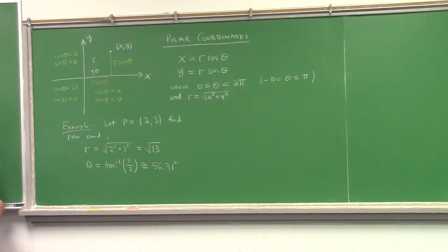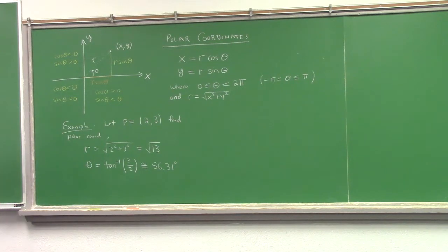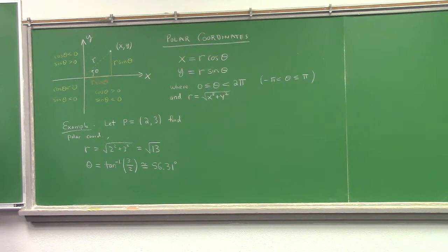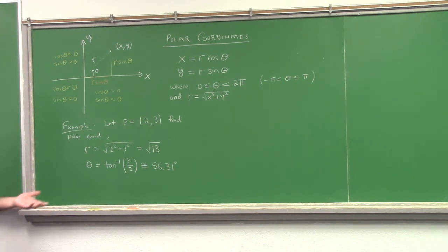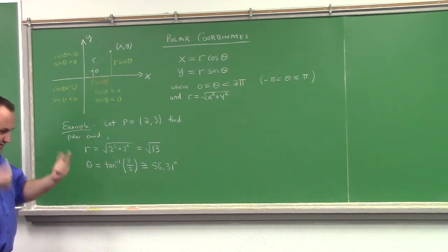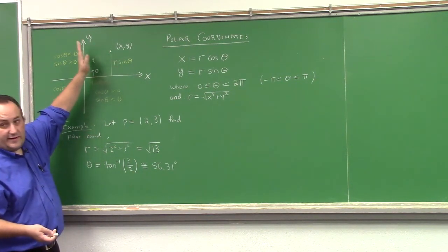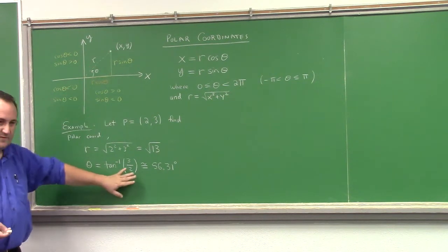Good. There's also an ambiguity about whether to use radian or degree measure — unless stated otherwise, I accept both. We can always convert to radians. Whenever I do inverse tangent, I ask myself: does this make sense? Since (2, 3) is in quadrant one, the angle should be between 0 and 90 degrees, and 56.31 degrees makes sense. Good.